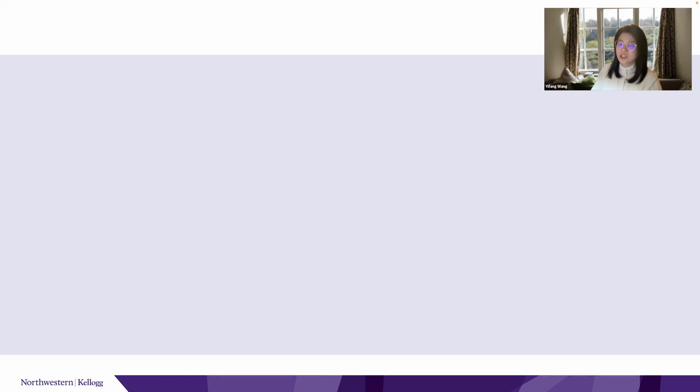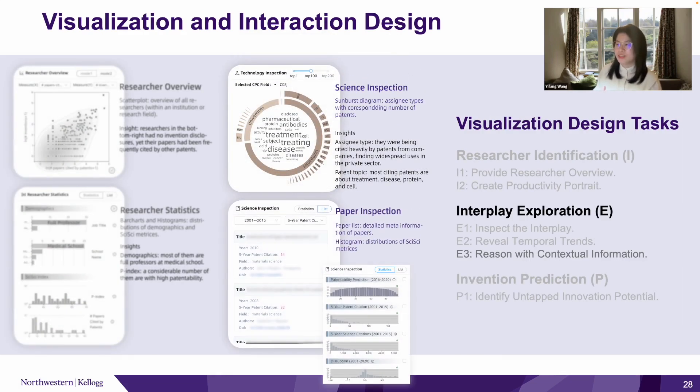The technology inspection view and the science inspection view show additional textual information about papers and patents, such as assignee distribution, patent keywords, paper lists, and so on.